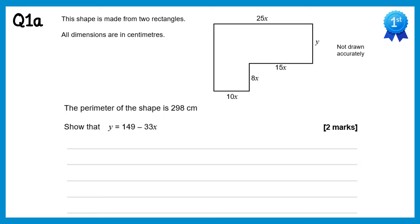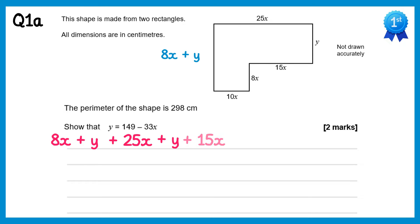For this first question we need to find the missing length, which will just be equal to 8x add y. Now if we find the perimeter by adding up all of the lengths we've got 8x add y, add 25x, add y, add 15x, add 8x, add 10x and we know because we're told in the question this must add up to 298.